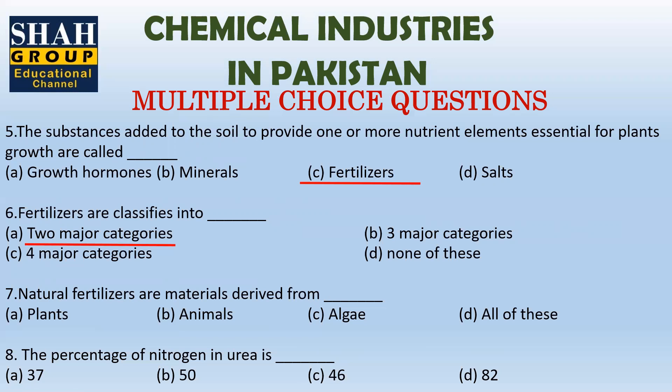Question seven: natural fertilizers are materials derived from plants, animals, and algae. All of these are natural fertilizers.